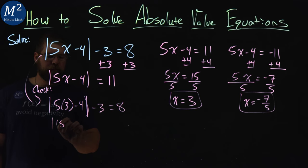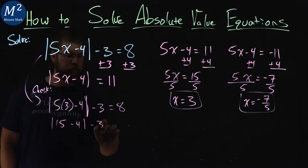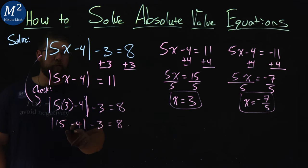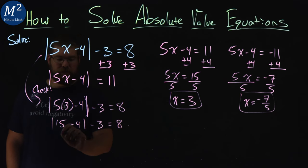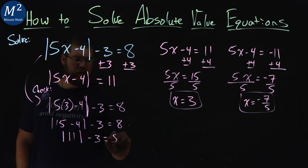5 times 3 is 15, minus 4, minus 3 equals 8. 15 minus 4 is 11, so the absolute value of 11. That's always weird to see. Minus 3 equals 8.